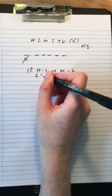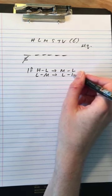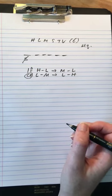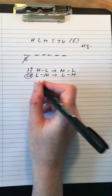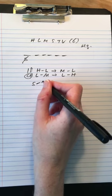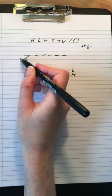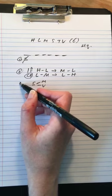So if L is earlier than M, then L must be earlier than H. That's our contrapositive. I'll just number our rules here.